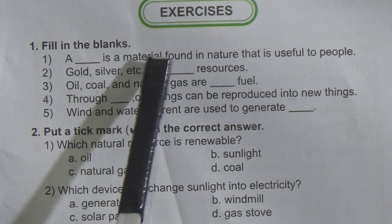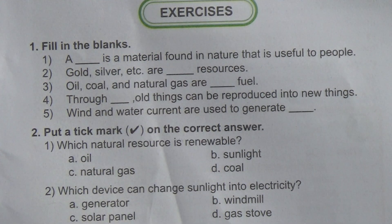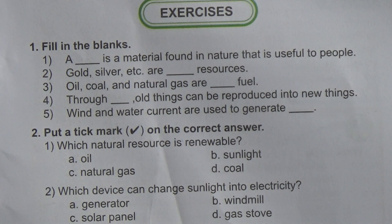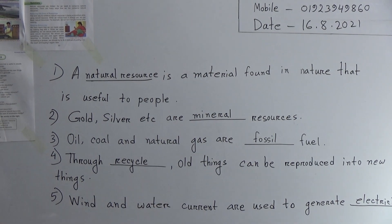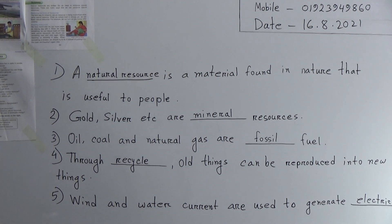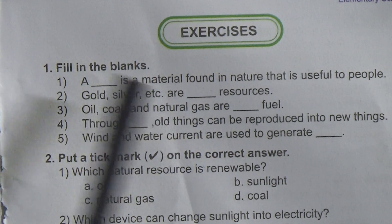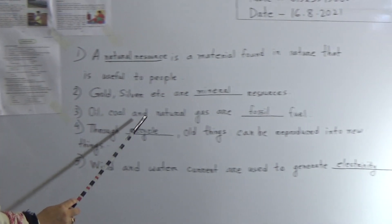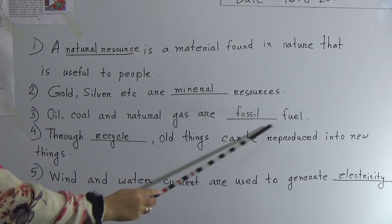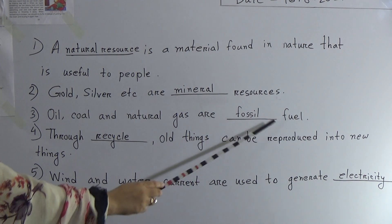Number two: 'Gold, silver, etc. are dash resources.' Answer: gold, silver, etc. are mineral resources. Number three: 'Oil, coal, and natural gas are dash fuel.' Answer: oil, coal, and natural gas are fossil fuel.